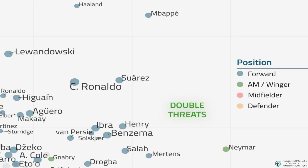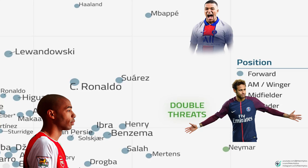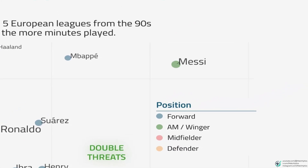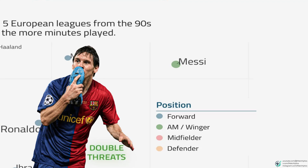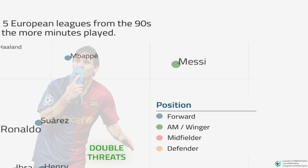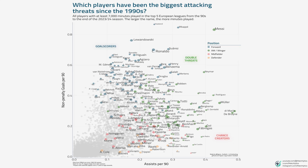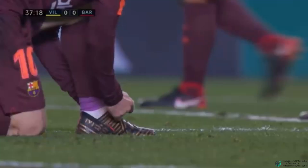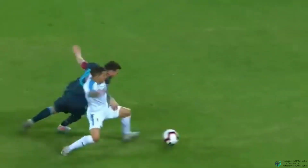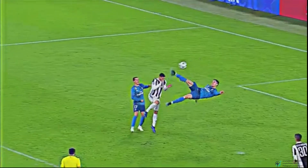Then we've got the double threats in the top right — players who score and assist at an elite level. Neymar, Thierry Henry, and Mbappe are here, with 0.5 to 0.8 goals and 0.3 to 0.4 assists per 90. These players have all-around attacking brilliance, but even among these legends, one player stands out. Lionel Messi is isolated in the top right corner with more than 0.8 non-penalty goals per 90 and 0.4-plus assists per 90. That's Messi scoring at the same rate as the best goal scorers like Ronaldo, while also assisting at the level of the best playmakers like De Bruyne. No one else comes close to this balance. His dot is massive too — he's played a ton of minutes and done this consistently for decades.